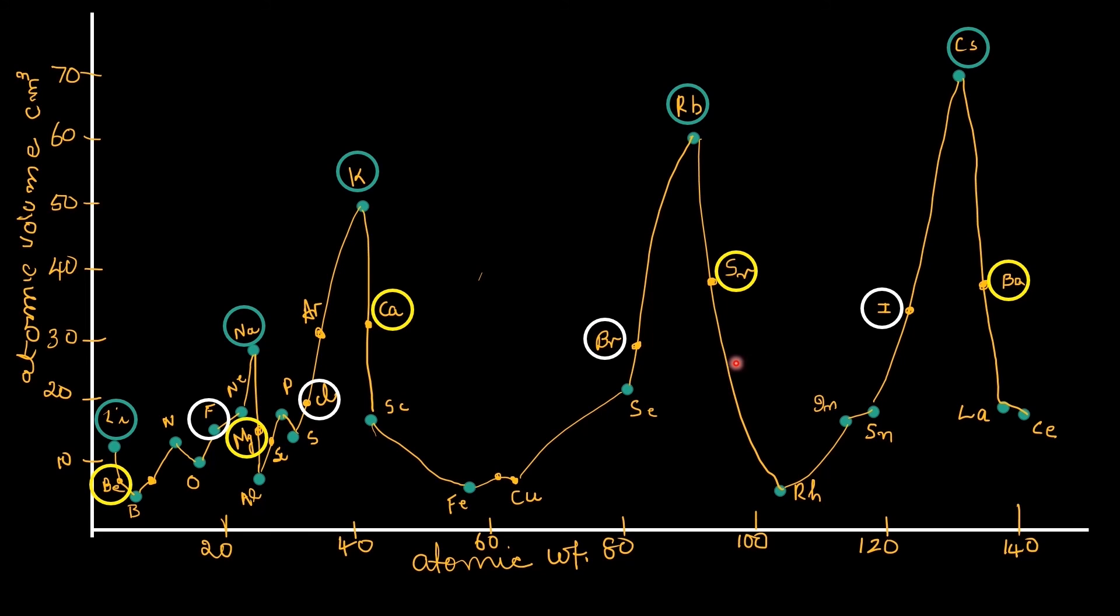From the graph it is clear as atomic weight increases, the atomic volume goes on fluctuating. It increases, then decreases, again increases, decreases, and like that it goes. So there is periodicity of property. Now I have not marked the position of all the elements. I have marked only a few, just enough to clarify the three important observations made by Lothar Meyer. The more electropositive elements shown in bluish green circles like lithium, sodium, potassium, rubidium, and cesium occupy the peaks. The less electropositive elements like beryllium, magnesium, calcium, strontium, and barium shown in yellow circles occupy the descending positions in the graph.